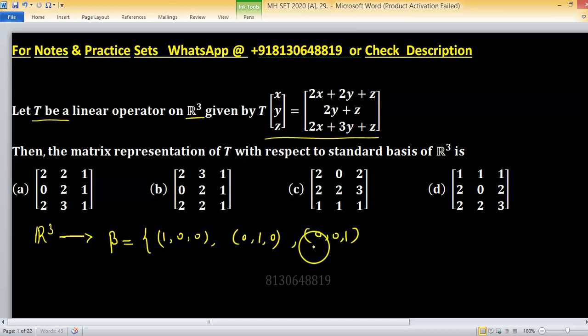Find the image of these three vectors, so T(1,0,0) will equal (2,0,2). Write this element in basis linear combination of basis elements, means 2 times e₁ plus 0 times e₂ plus 2 times e₃.